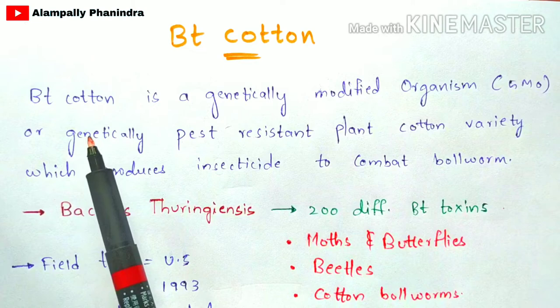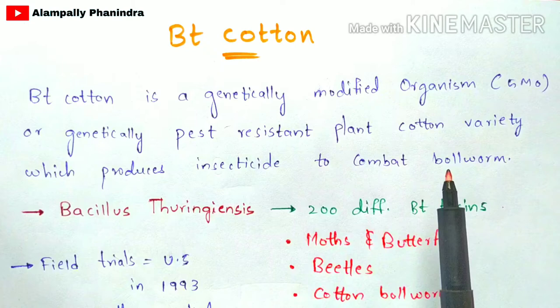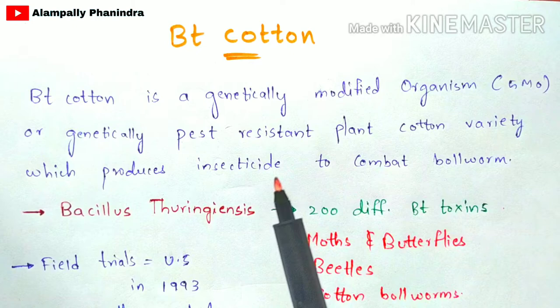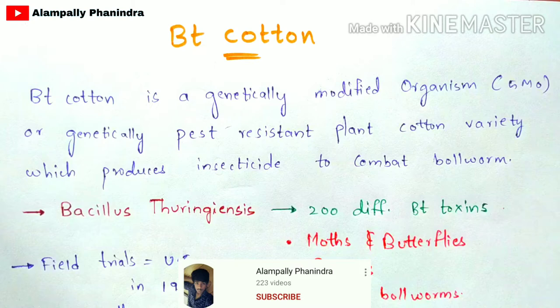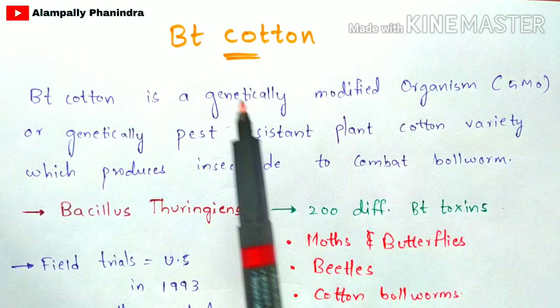BT cotton is a genetically modified organism, or genetically pest-resistant plant cotton variety, which produces insecticide to combat boll worms. These boll worms are insects which normally feed upon cotton leaves. If you take a field where you are going to cultivate cotton, normally these boll worms and many other types of insects feed on the cotton leaves.